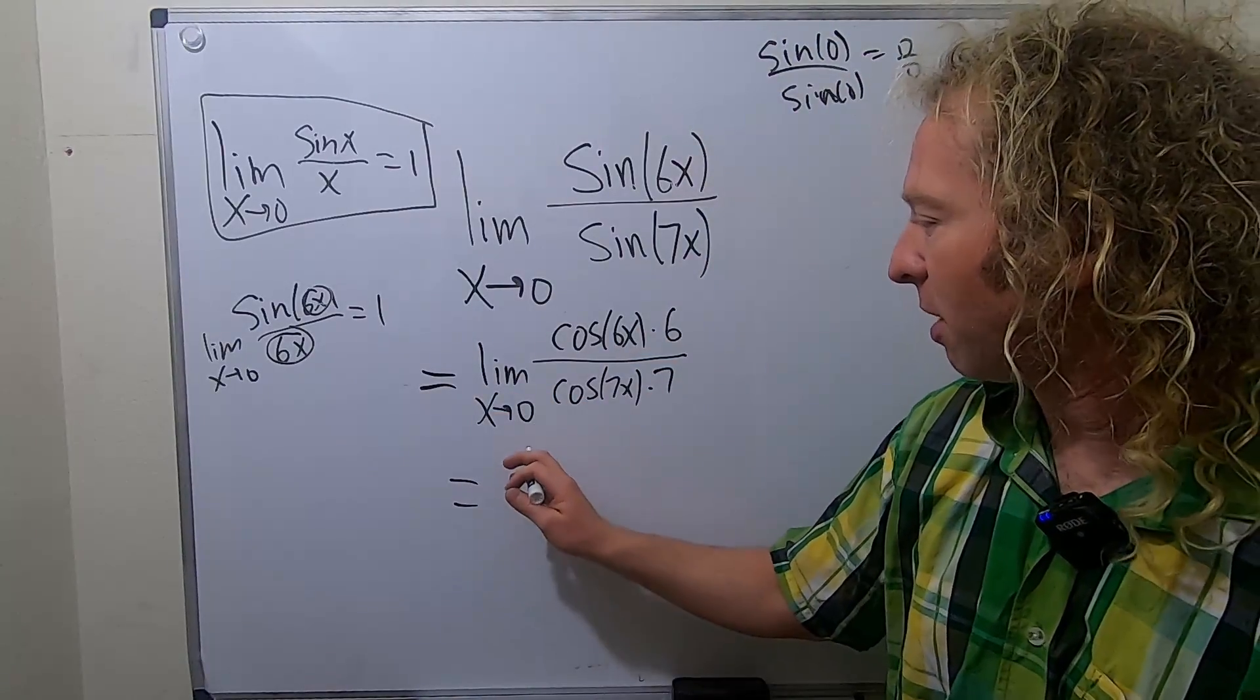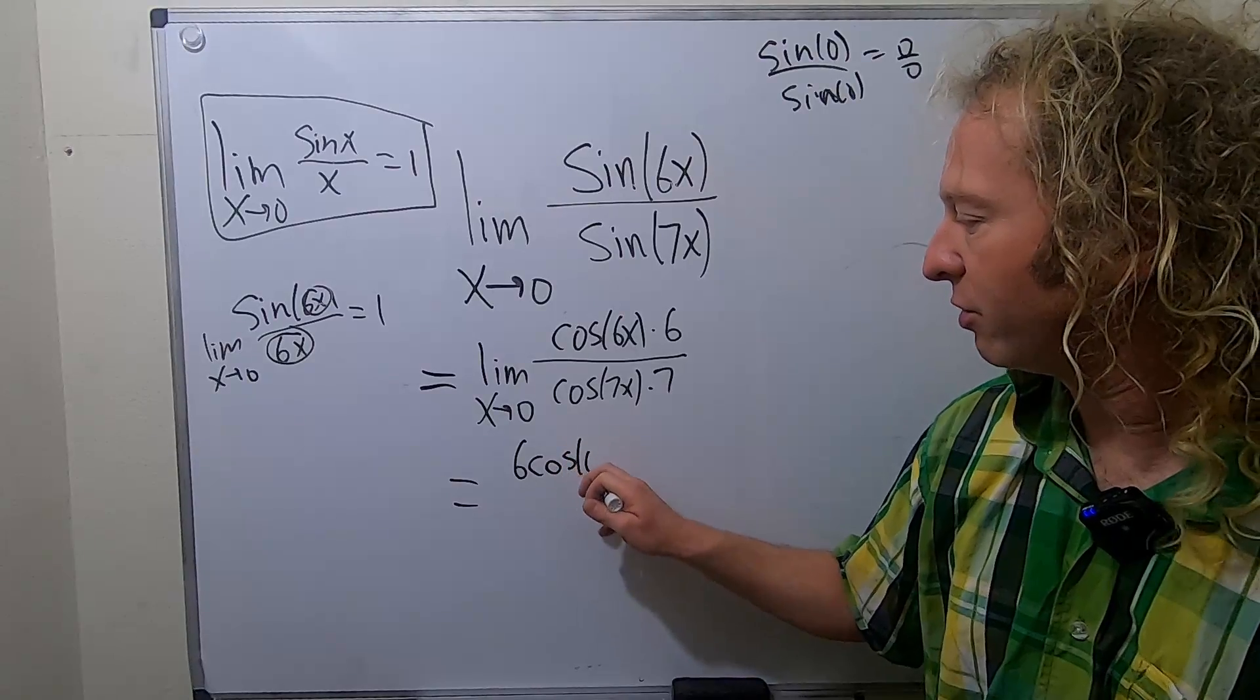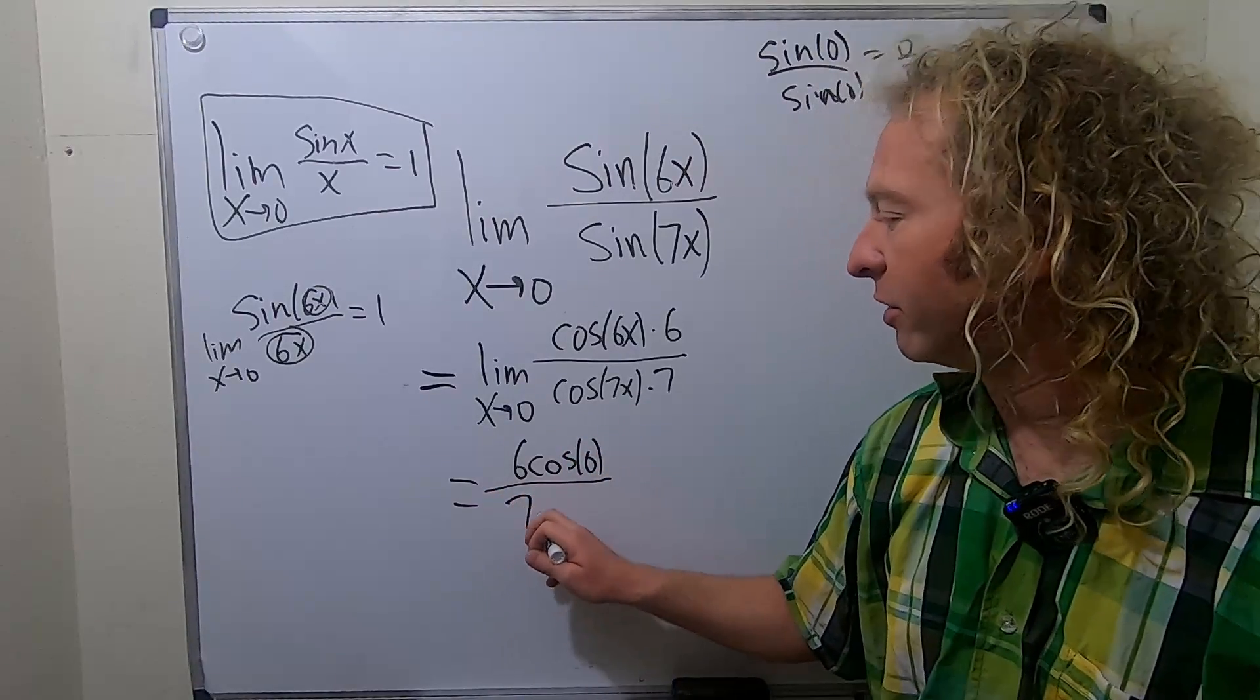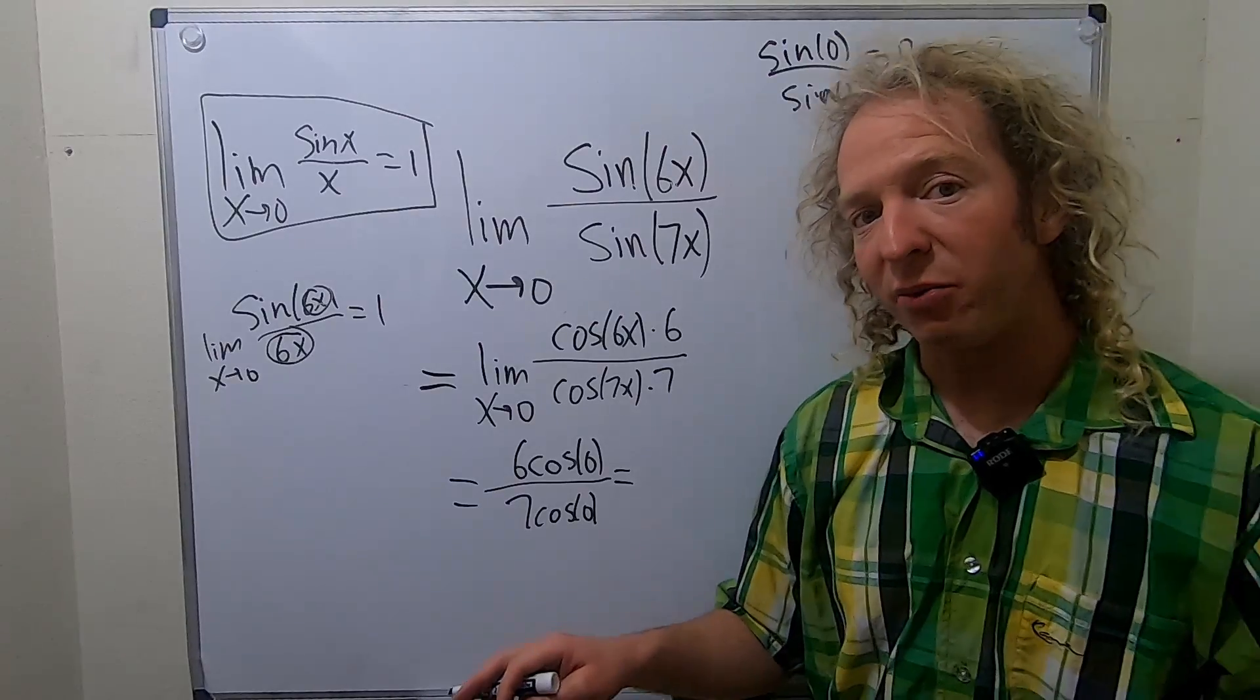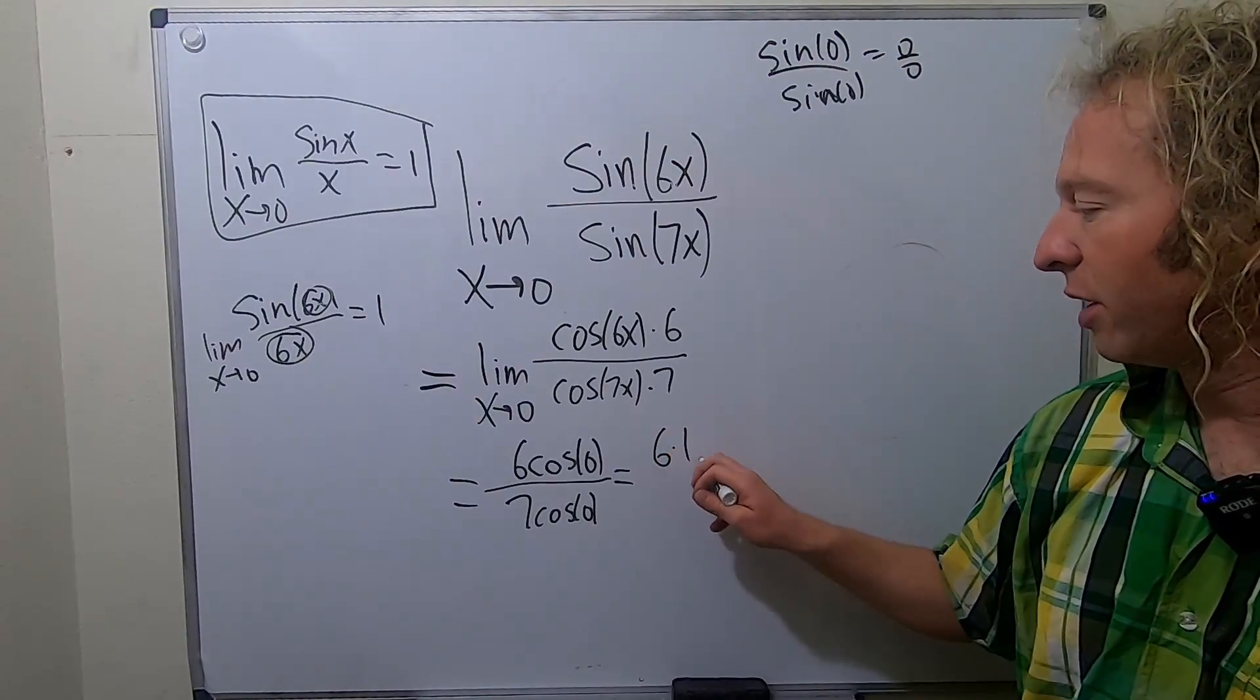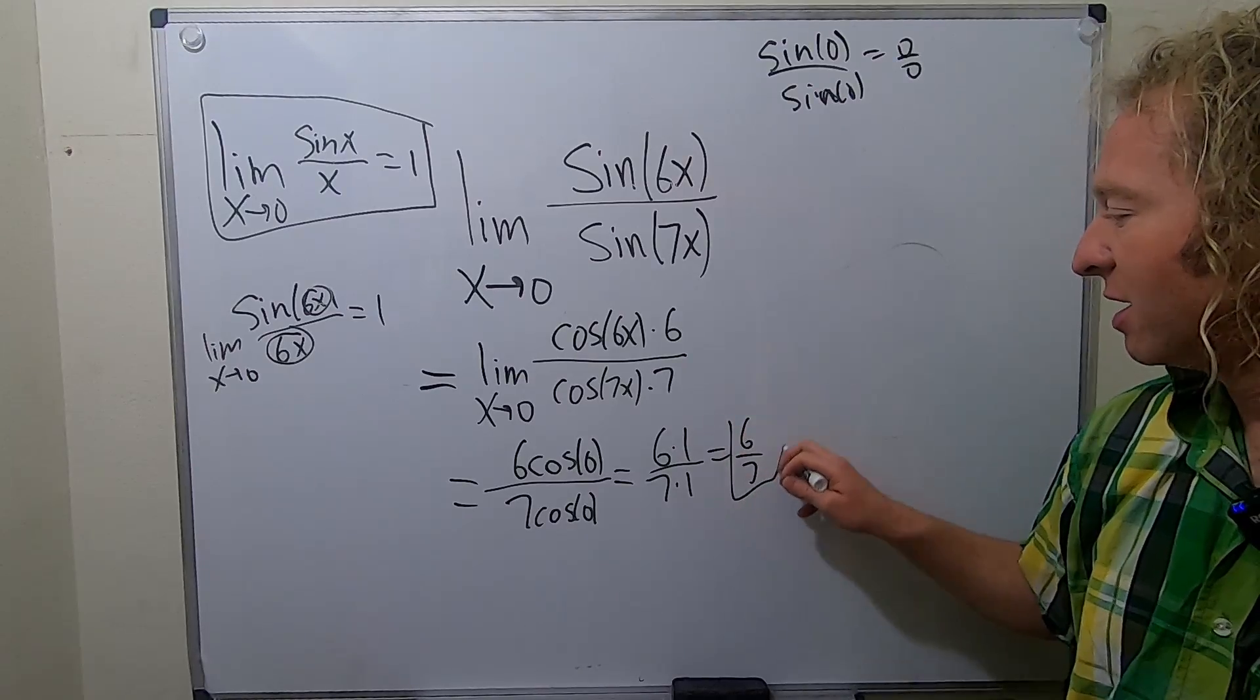So I'll put the 6 in the front. So we get 6 cosine of 0 over 7 cosine of 0. Cosine of 0 is 1. So this will be 6 times 1 over 7 times 1. So this is just 6 over 7. And that is the answer.